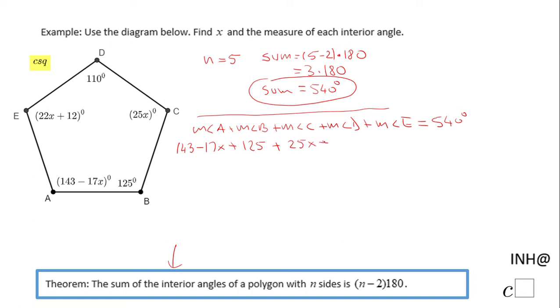The measure of angle D is 110 degrees, and the measure of angle E is 22x + 12. All these together equal that 540 I mentioned before.